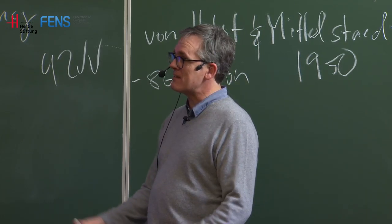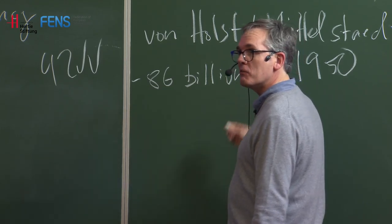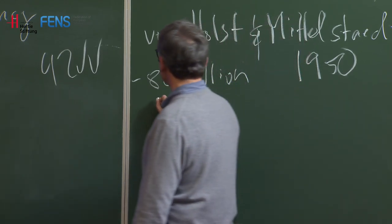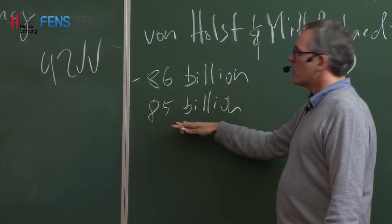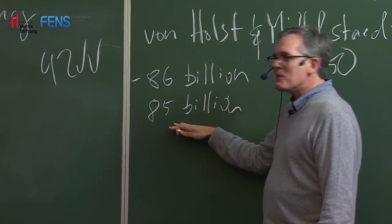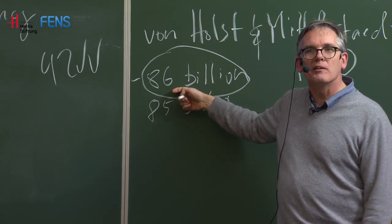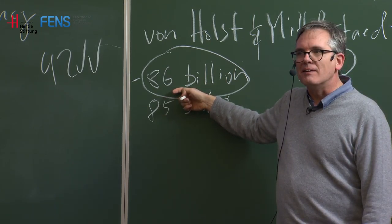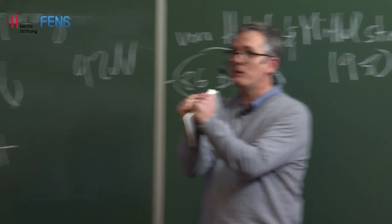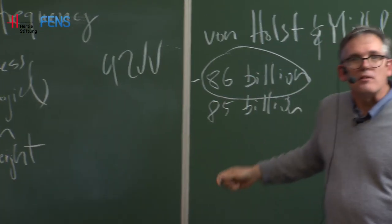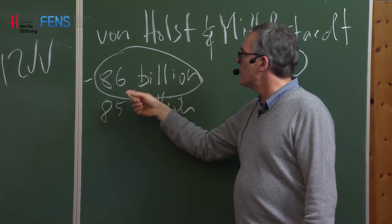These estimates have varied widely. It's going to be a big number, on the same order of magnitude. The Herculano paper says 85 billion. We're not going to worry about glial cells right now - let's focus on neurons and say this is our estimate. The brain is only so big - it's only yay big - but where are these 86 billion neurons?